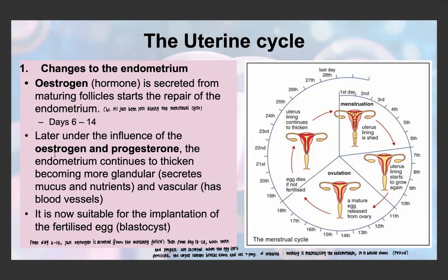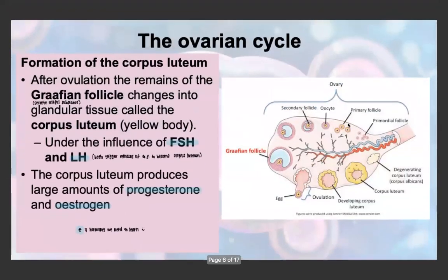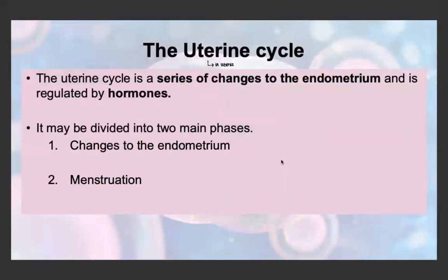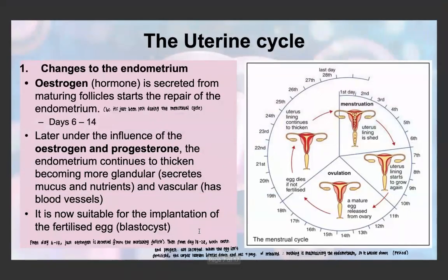Later, under the influence of both estrogen and progesterone, the endometrium thickens even more, becomes glandular, and secretes mucus and nutrients. It also becomes vascular, meaning it has a good supply of blood vessels — this is important so it can be ready for the implantation of a fertilized egg. From day 6 to 14, only estrogen is secreted by the maturing follicle as it grows into a Graafian follicle. From day 14 to 28, after ovulation, both estrogen and progesterone are secreted by the corpus luteum.